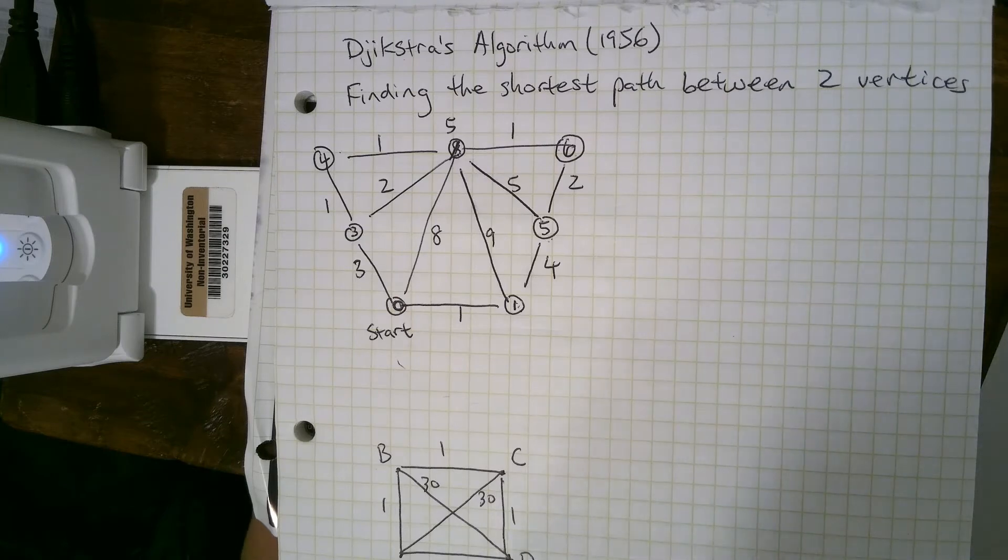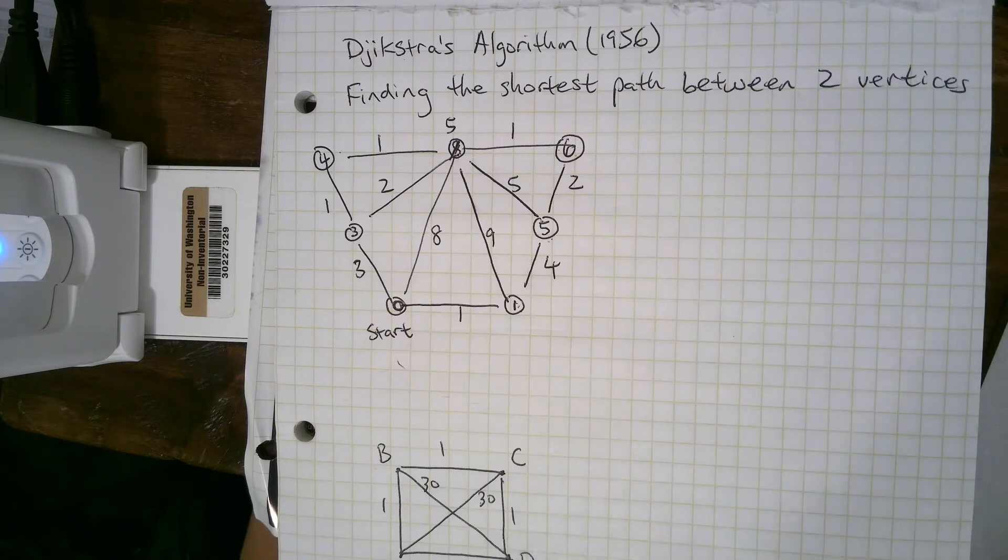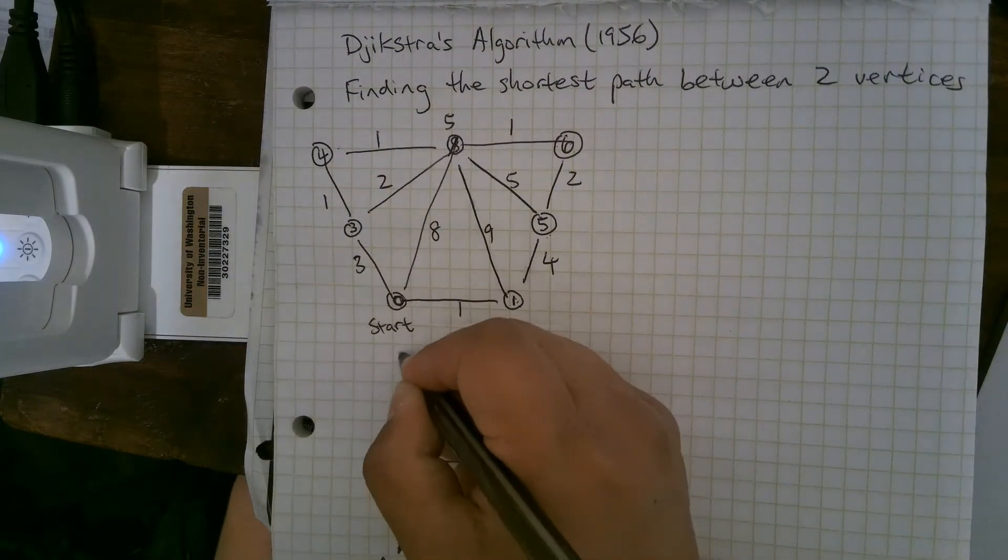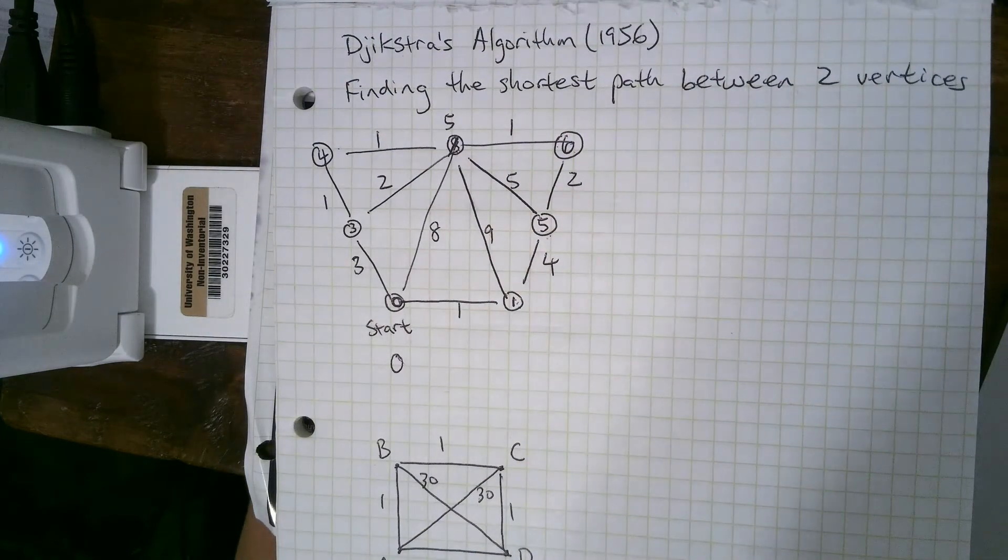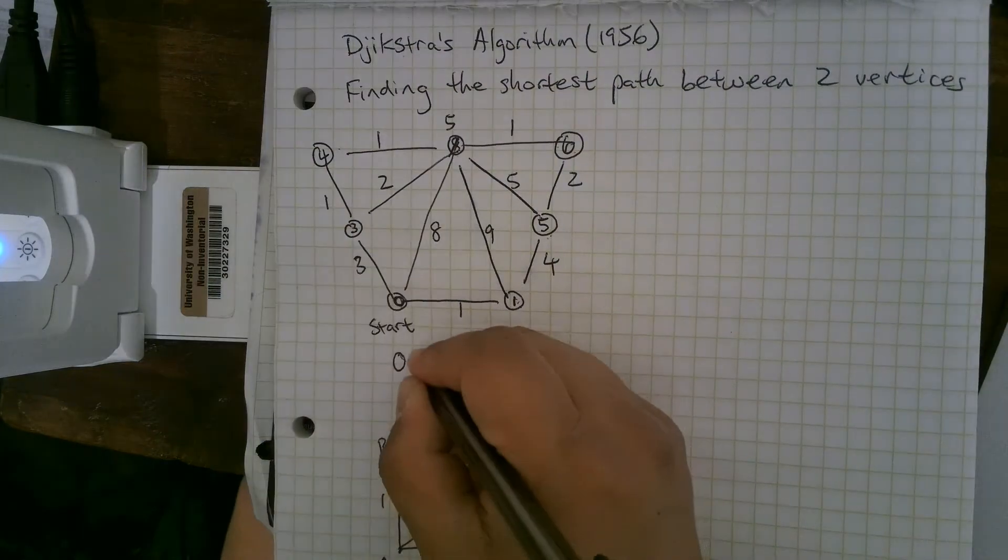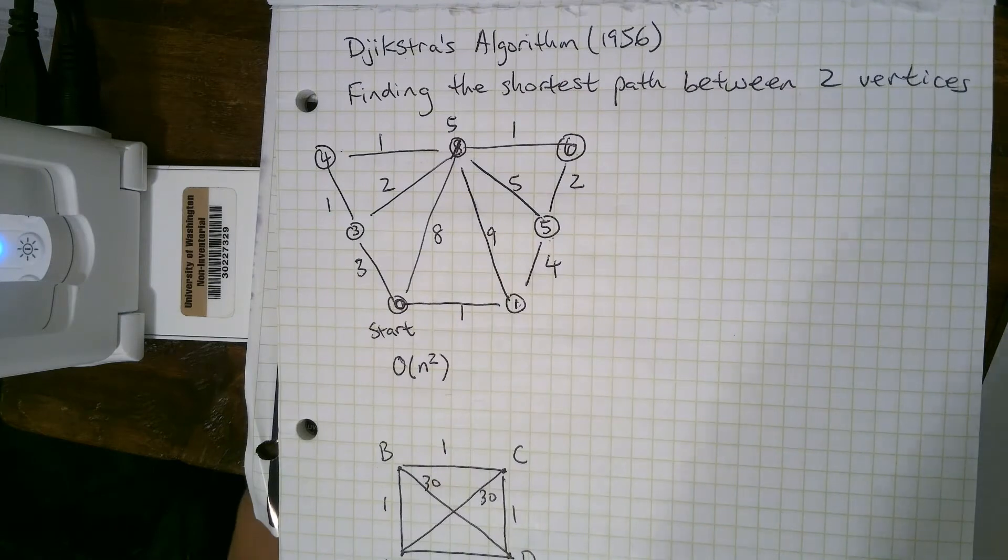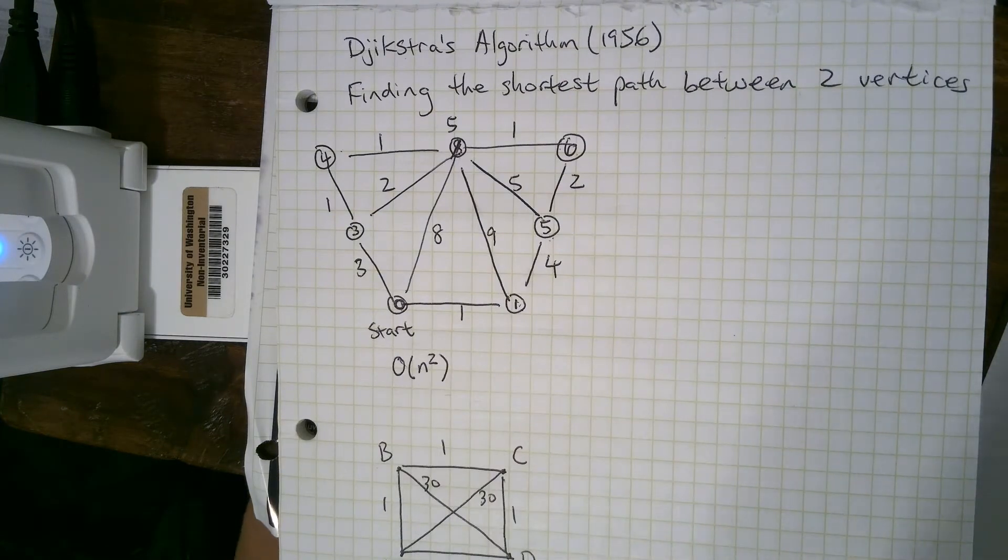Okay, so this algorithm actually seems a lot simpler than the Heldkarp or a lot less messy than Brute Force or even the Greedy algorithm. Depending on implementation, there's a few different complexities, but the best complexity you can get is O of n squared, where n is the number of vertices. So that's looking pretty fast. That's polynomial time. A lot better than what we've been looking at.